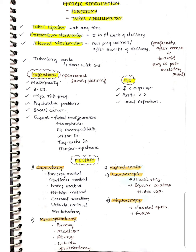Today let's learn about female sterilization, which is tubectomy or tubal sterilization. It is a permanent method of contraception. Tubal ligation can be done at any time. Postpartum sterilization is tubal sterilization done within the first week of delivery while the patient is still hospitalized. Interval sterilization is done in a non-pregnant woman, preferably after six weeks of delivery, and preferably after menses to avoid pregnancy in the post-ovulatory period.